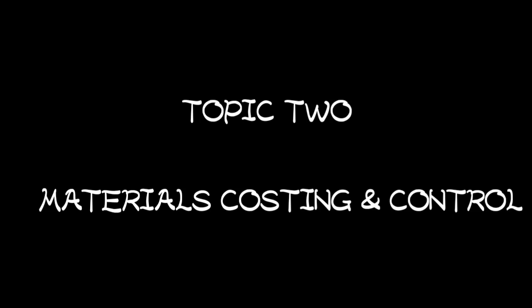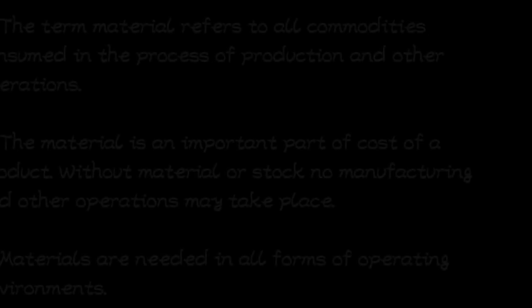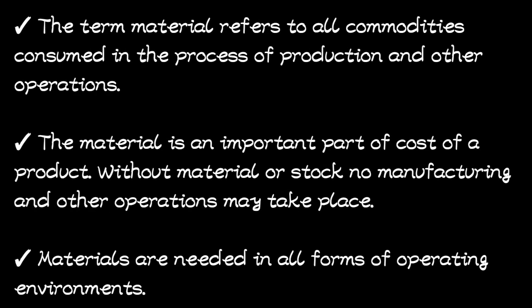We are introducing Topic 2, which is materials costing and control — topic 2 of cost and management accounting. We are going to start by defining what materials are. The term material refers to all the commodities that are consumed in the process of production and other operations. These are the inputs in the production process and other operations of the organization.